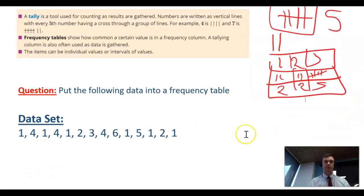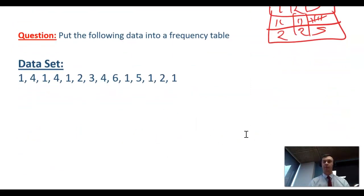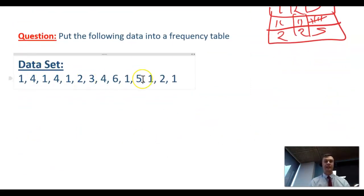What we're going to do now is work through an example. I want you to put the following data into a frequency table. We have a data set here from rolling a die, and these are the results that come up. We want to put this into a frequency table that includes both a frequency and a tally, and I'll show you how we do that.